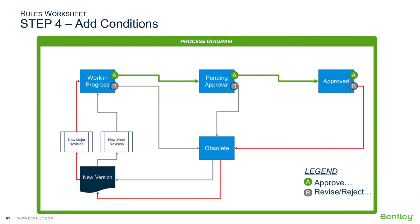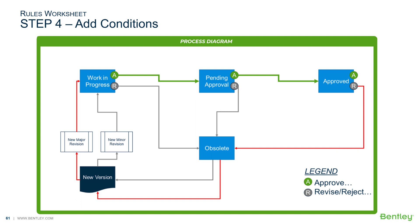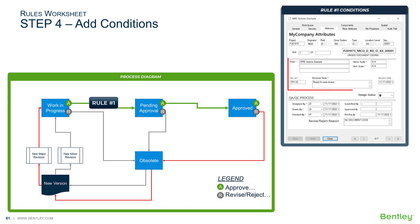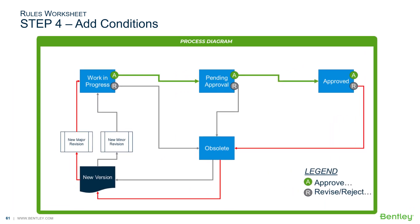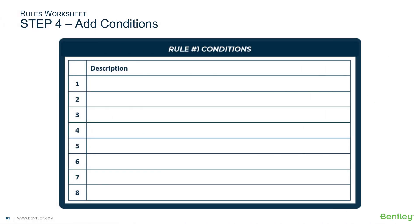Step number four is to add conditions. After a brief discussion with the project team, the BIM coordinator ascertained that rules number one, two, four, and six cannot occur if certain conditions are not met. To approve a work in progress document, the title block attributes must be populated. Similarly, when a document is rejected, the reject reason needs to be populated. Let's look at rule number one. Like with actions, we list each condition in simple terms. There are eight attributes that need to be populated.